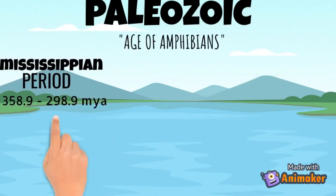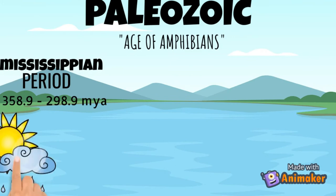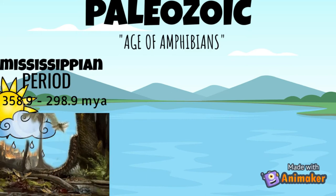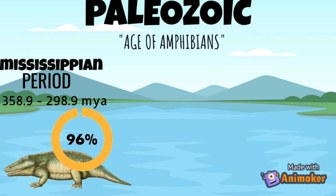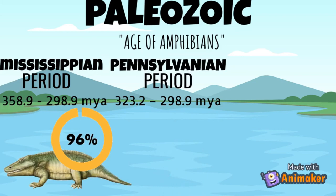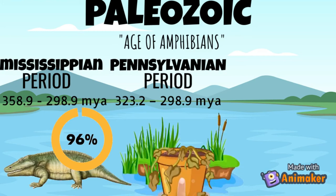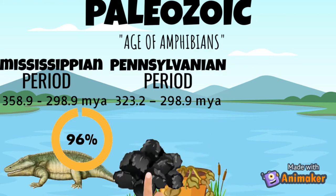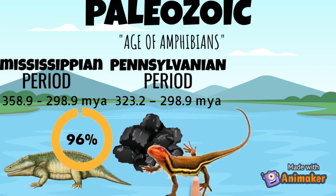The Mississippian period was 358.9 to 323.2 million years ago. During this period, the cooling and drying of the climate led to the Carboniferous Rainforest Collapse, and 96% of all vertebrates became extinct. The Pennsylvanian period was 323.2 to 298.9 million years ago. Widespread swamps laid down thick beds of dead plant material that today constitute most of the world's coal. Hylonomus is a reptile that lived during this period but became extinct within it.